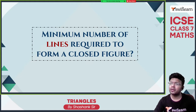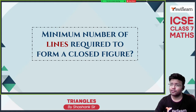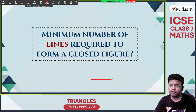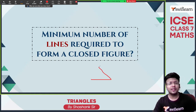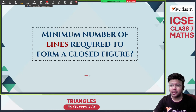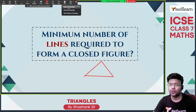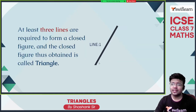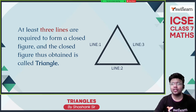What is the minimum number of required lines to form a closed figure? Can you guess this? If I draw a single line, it is a line — not a geometrical figure and not closed. If I draw one more line attached to it, it is an angle, not a geometrical figure. Now if I close this, that will become a triangle. So the minimum number of required lines to form a closed figure is 3. At least 3 lines are required to form a closed figure, and the closed figure thus obtained is called a triangle.